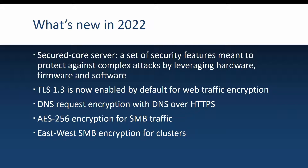One feature is Secured Core Server, which is a set of security features meant to protect against more complex attacks by leveraging hardware, firmware, and software together. In Windows Server 2022, the protocol for web traffic encryption is now TLS 1.3 by default. DNS now supports request encryption with DNS over HTTPS. SMB also supports a more complex encryption algorithm — AES 256 — and clusters now support east-west SMB encryption, which is leveraged in Storage Spaces Direct clusters in CSV volumes.